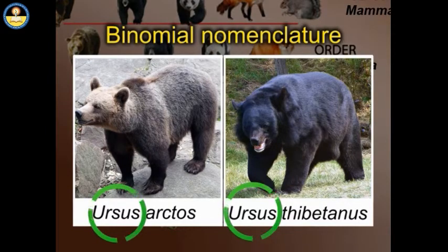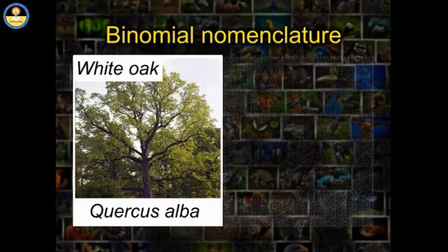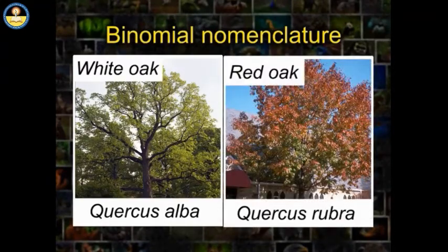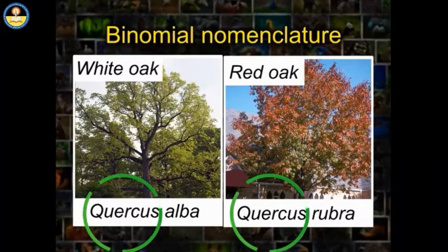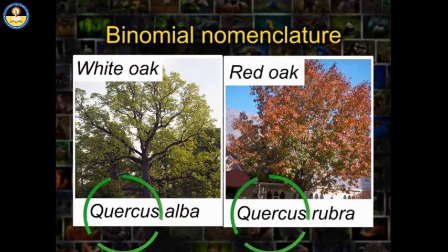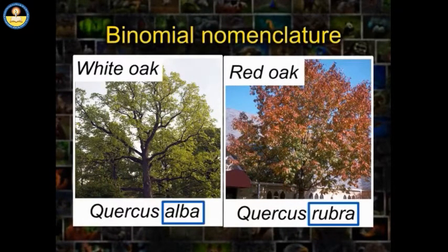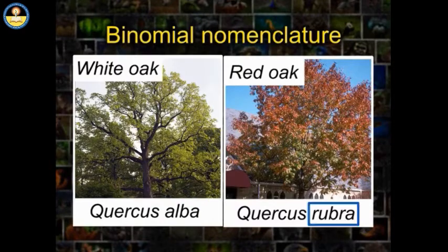Let us understand with the help of examples. The scientific name of the white oak is Quercus alba, while red oak is Quercus rubra. The first word in the names is taken from the genus and it applies to all species of oaks. All types of oak start with the genus Quercus. Alba and rubra are two different species of oak — alba is for white oak and rubra is for red oak.